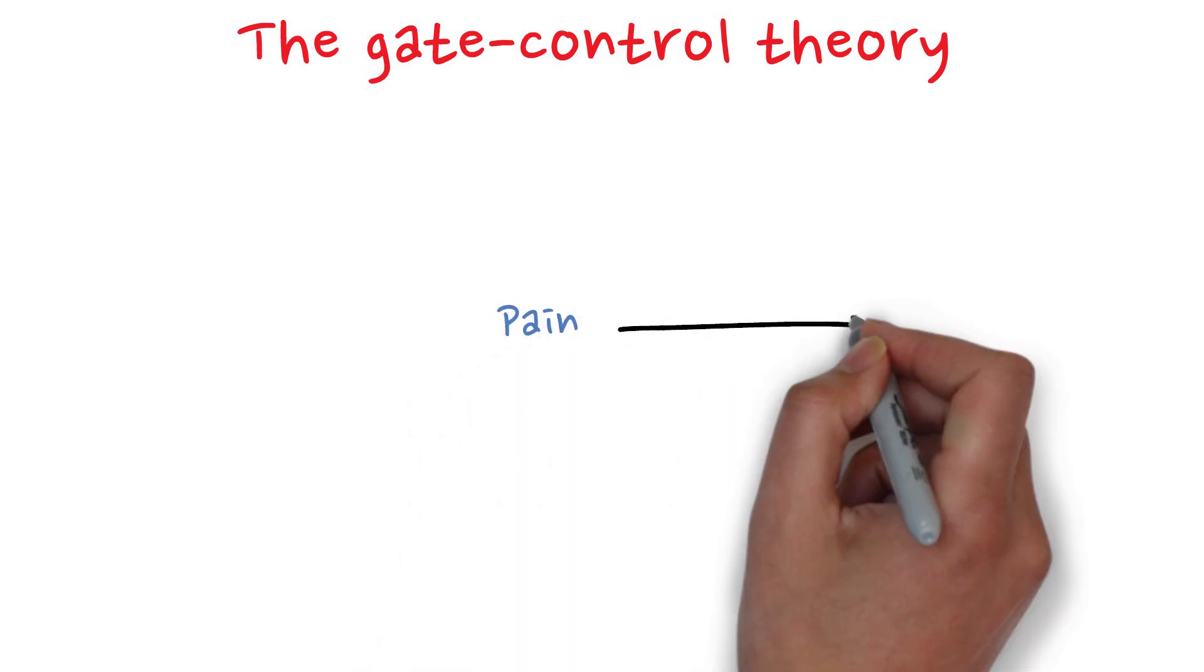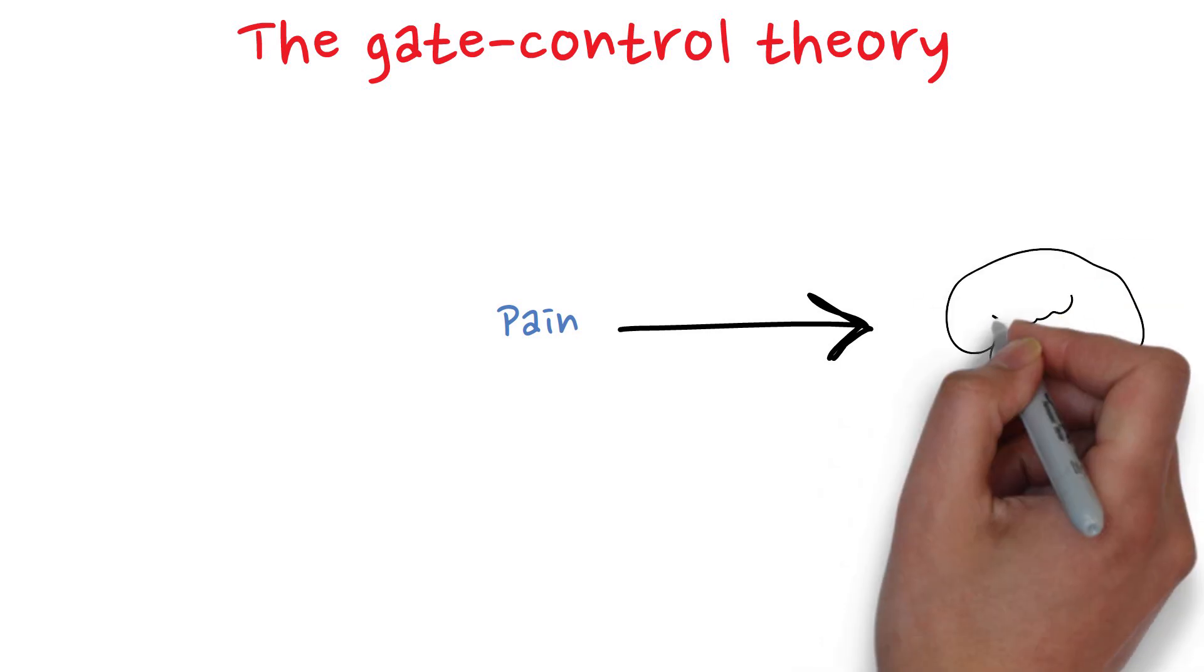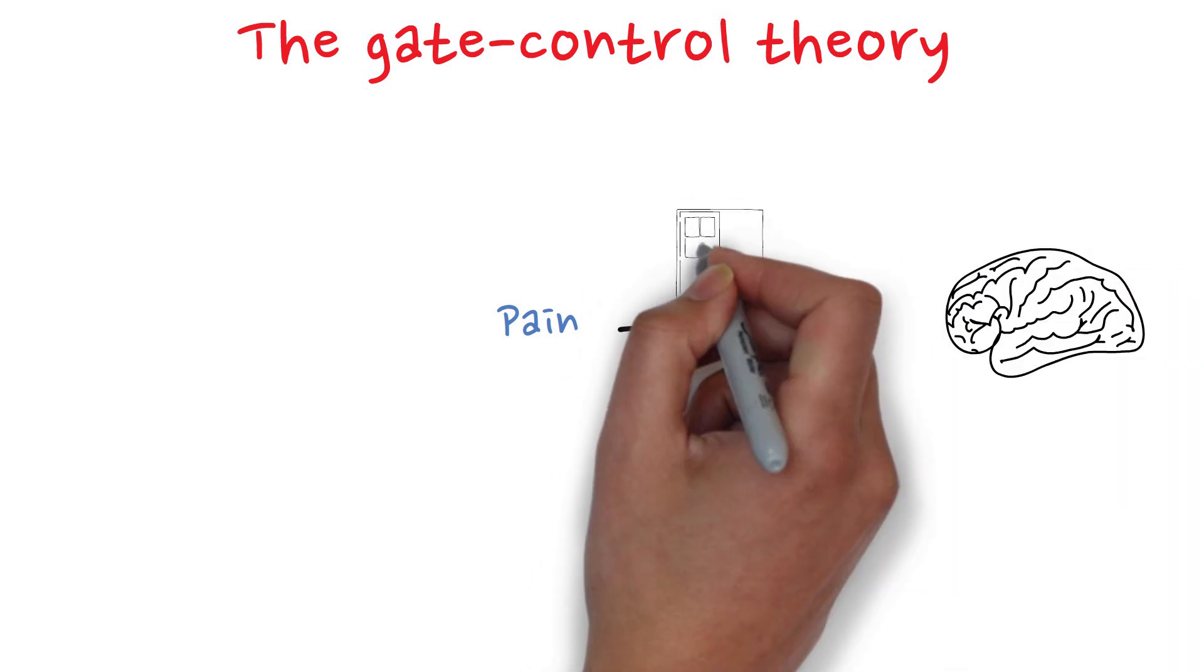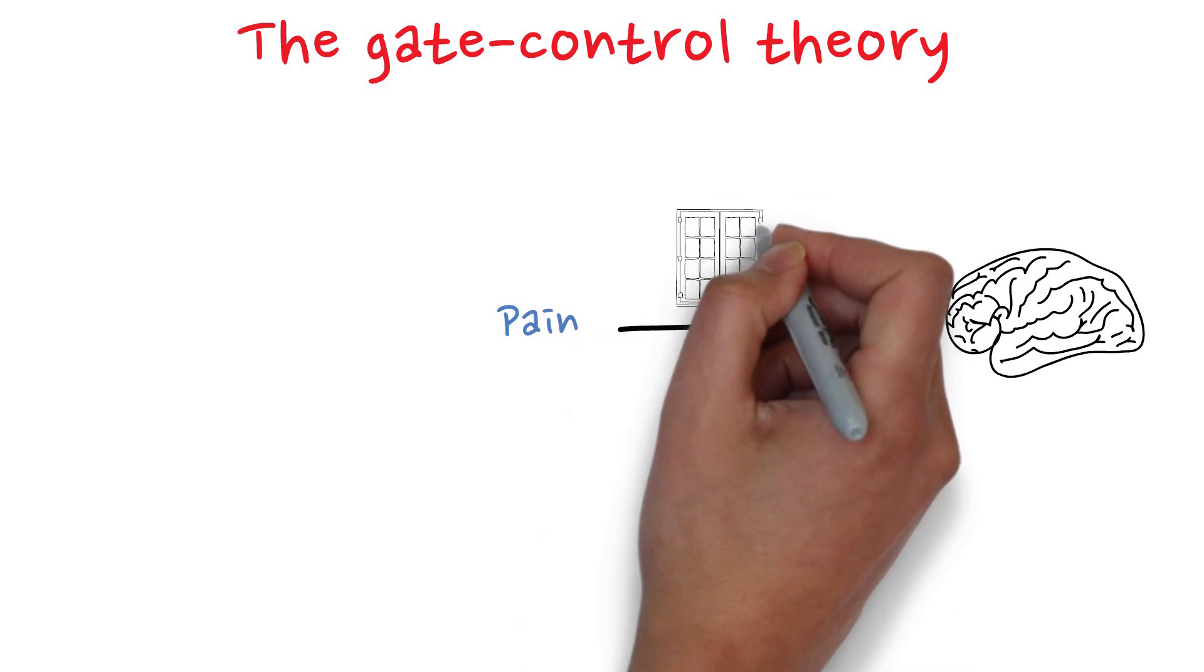According to this theory, pain signals are not simply transmitted directly to the brain. Instead, they pass through a gate mechanism in the spinal cord. This neural gate can be opened or closed in varying degrees,